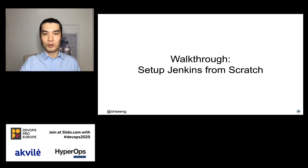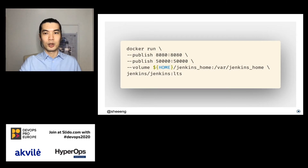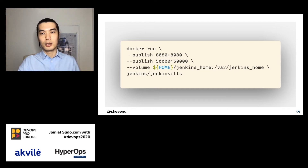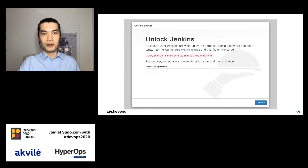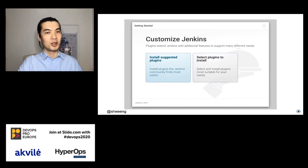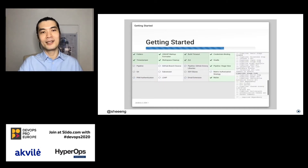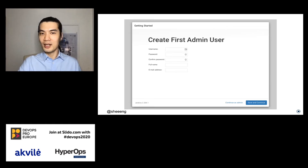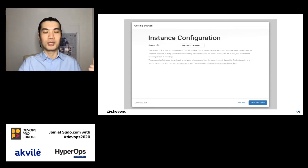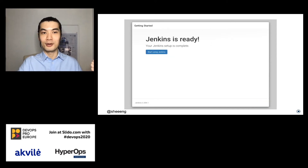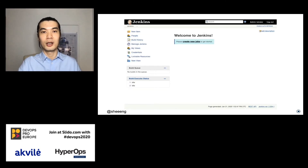First up, we will set up Jenkins from scratch. In this example, I'll just use a plain Docker run command and run the Jenkins long-term support container image. The first page we see requires us to unlock Jenkins with the initial admin password, install the plugins we need, create the first administrative user, and provide the Jenkins URL. After all this, we finally have Jenkins ready, as you can see on the page.